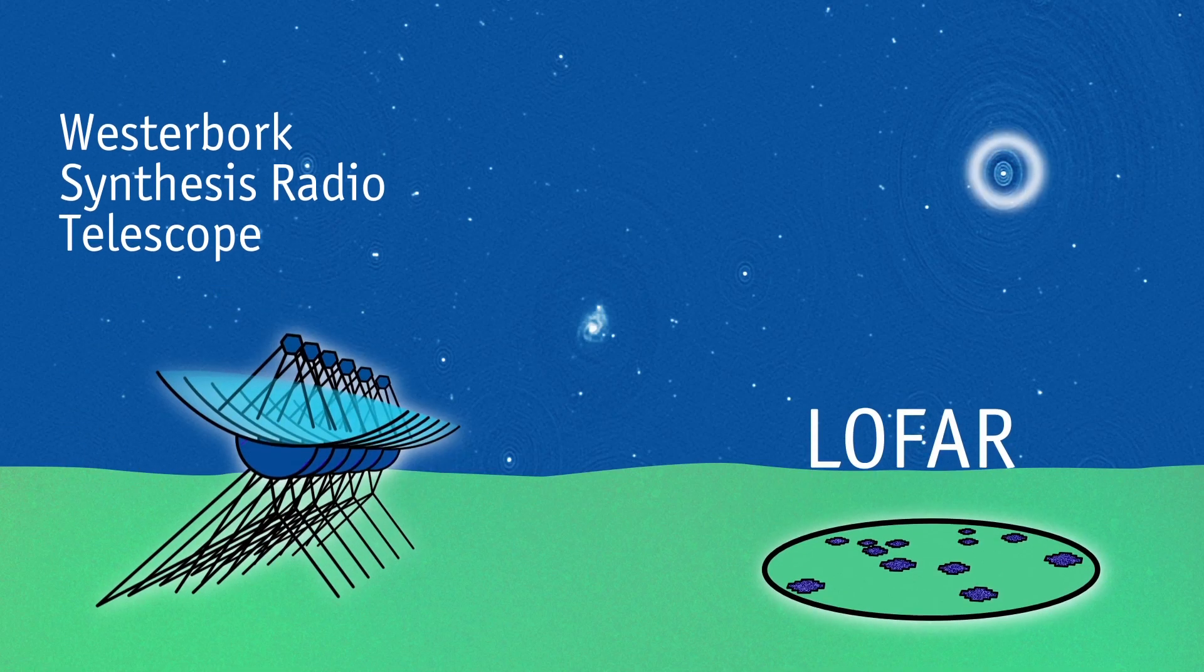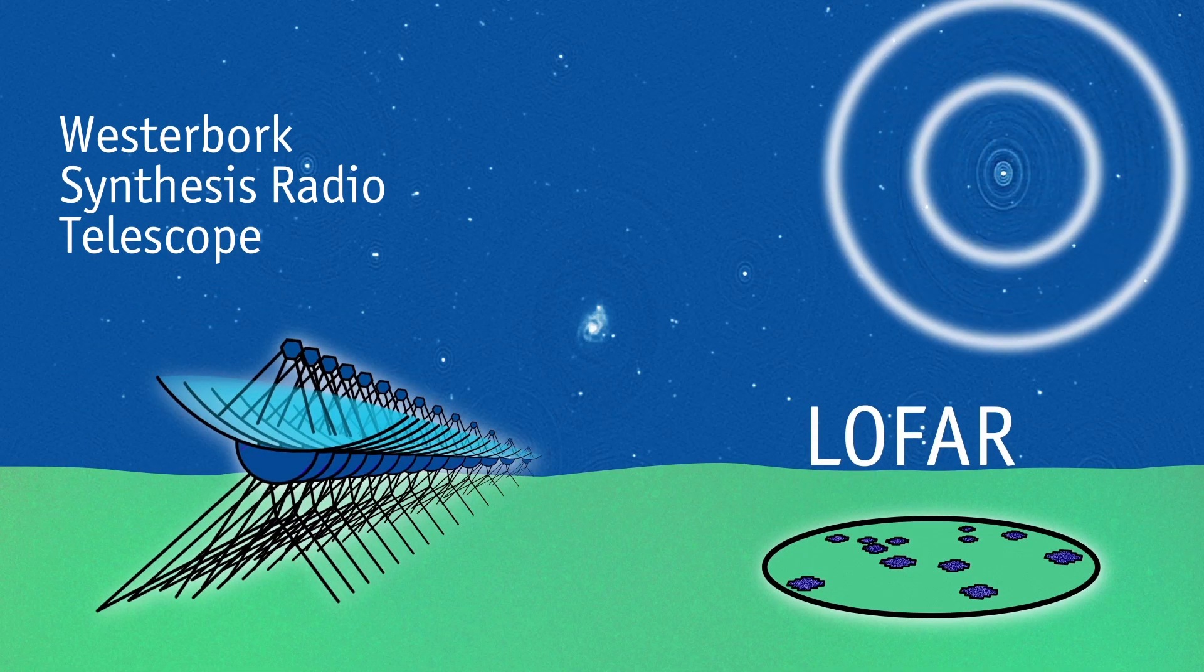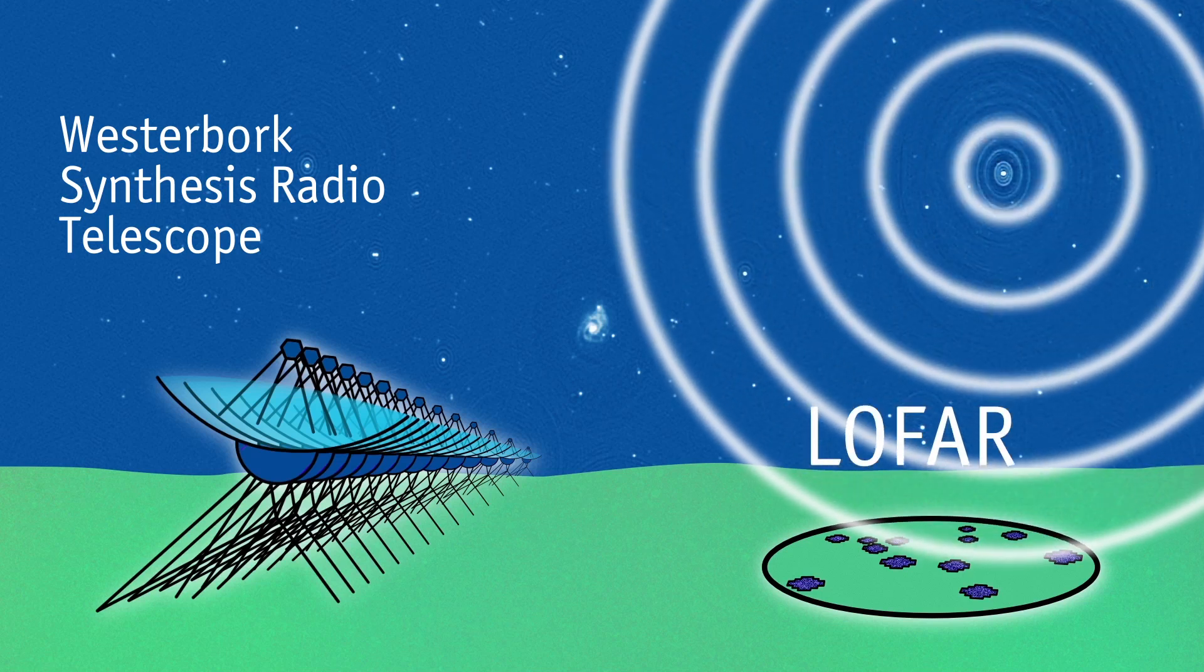Radio telescopes like LOFAR and the Westerbork telescope map the sky by collecting radio waves instead of light, which is what optical telescopes do.